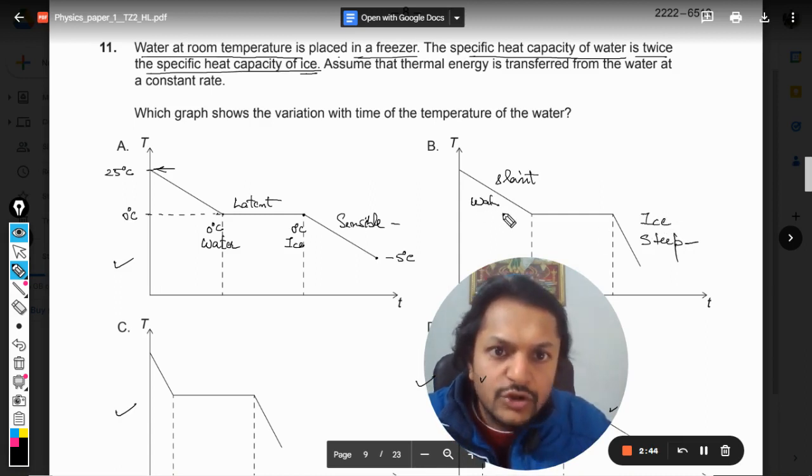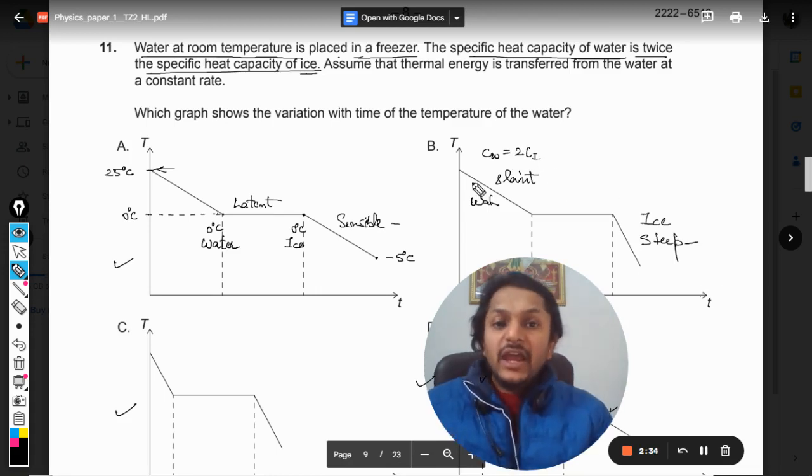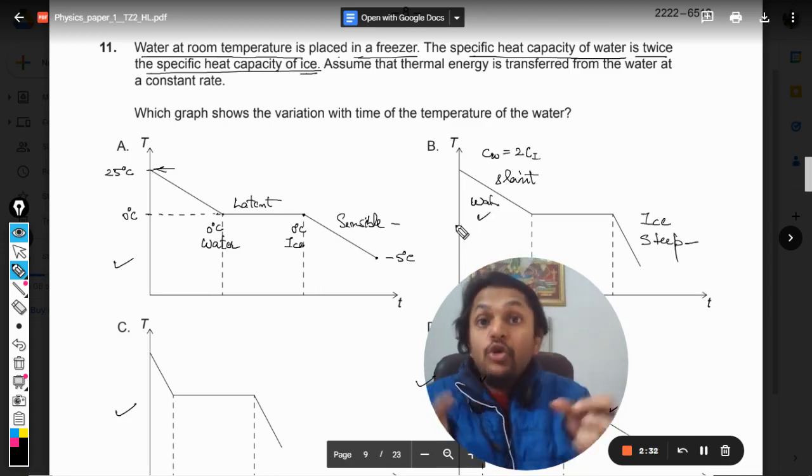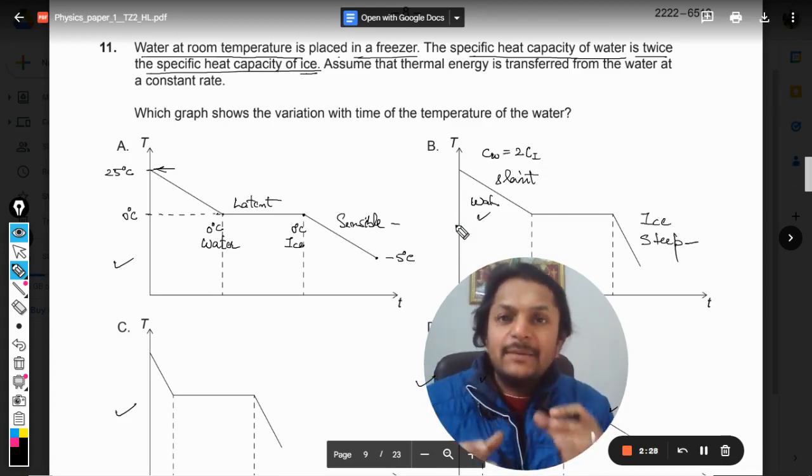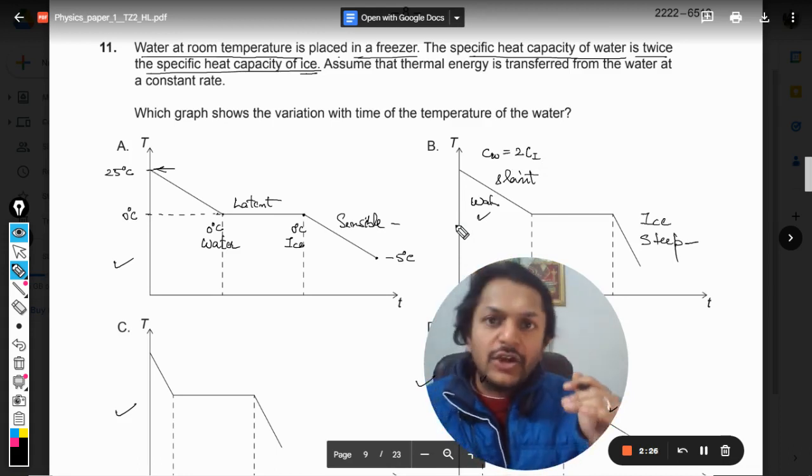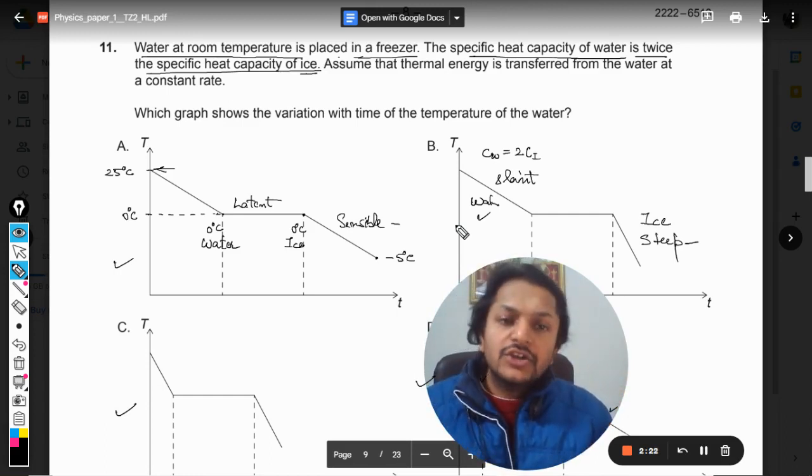It means that water would be absorbing more heat for changing the temperature by the same degrees. So if you want the same delta T, you need more heat in the case of water. Obviously it will be slower because it has to gather more heat.